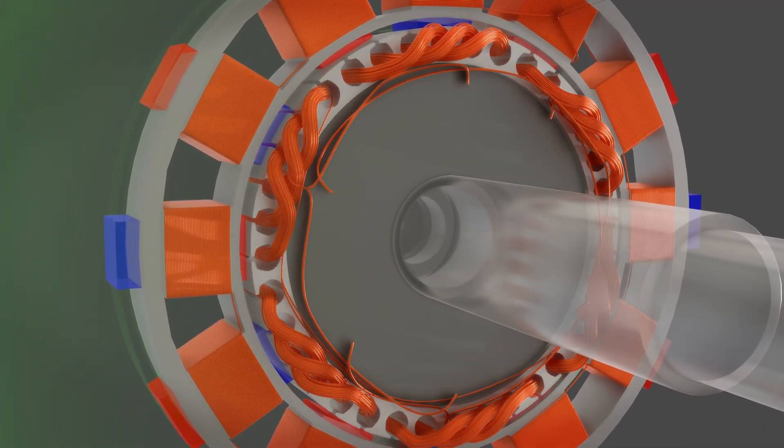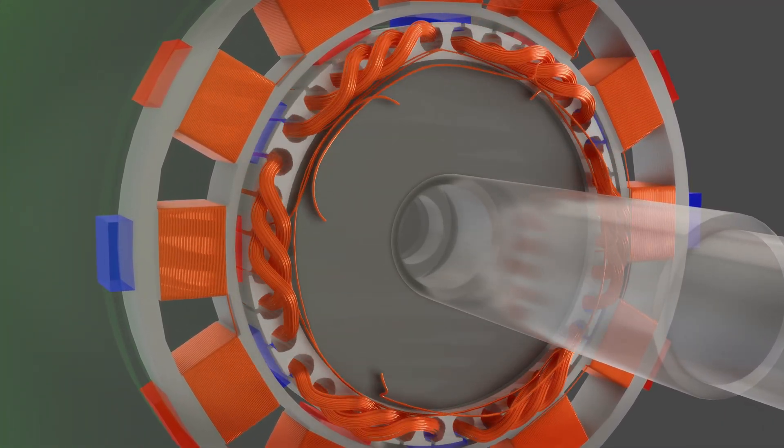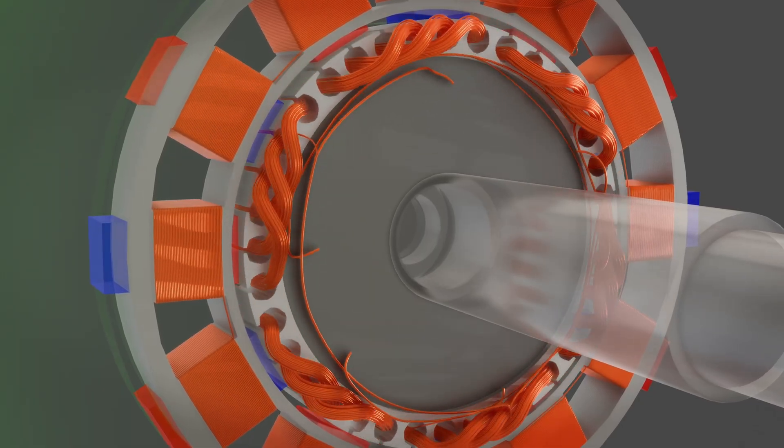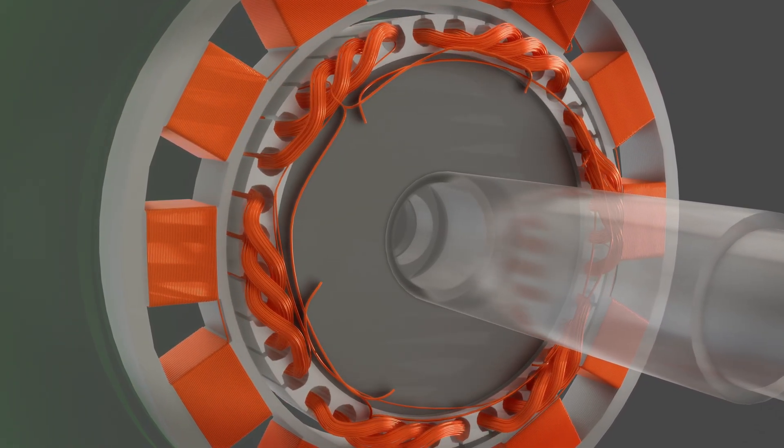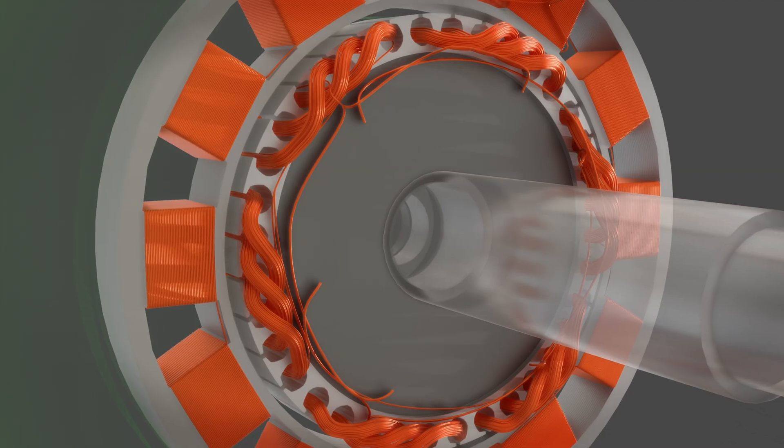When the rotor rotates, it cuts the alternating magnetic fields produced by the exciter stator. The exciter rotor coils generate three-phase AC current, but the main alternator field requires DC current.